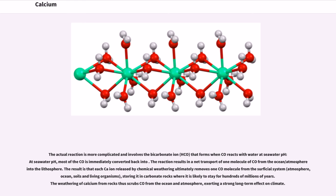The actual reaction is more complicated and involves the bicarbonate ion HCO₃⁻ that forms when CO₂ reacts with water at seawater pH. At seawater pH, most of the CO₂ is immediately converted back into HCO₃⁻. The reaction results in a net transport of one molecule of CO₂ from the ocean/atmosphere into the lithosphere. The result is that each Ca²⁺ ion released by chemical weathering ultimately removes one CO₂ molecule from the surficial system (atmosphere, ocean, soils, and living organisms), storing it in carbonate rocks where it is likely to stay for hundreds of millions of years. The weathering of calcium from rocks thus scrubs CO₂ from the ocean and atmosphere, exerting a strong long-term effect on climate.